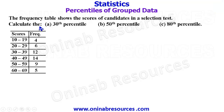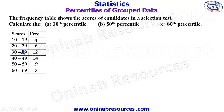Calculate A, the 38th percentile; B, the 58th percentile; and C, the 88th percentile. We have the table here with the first column being the scores and the second column being the frequency.